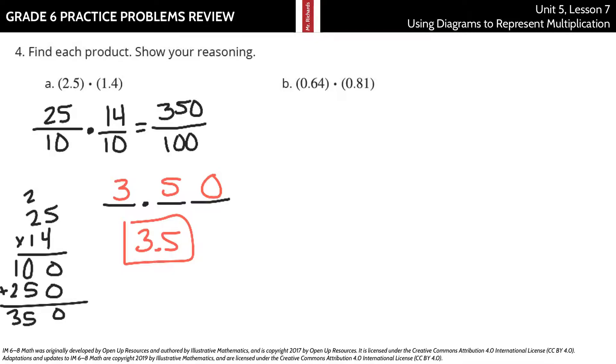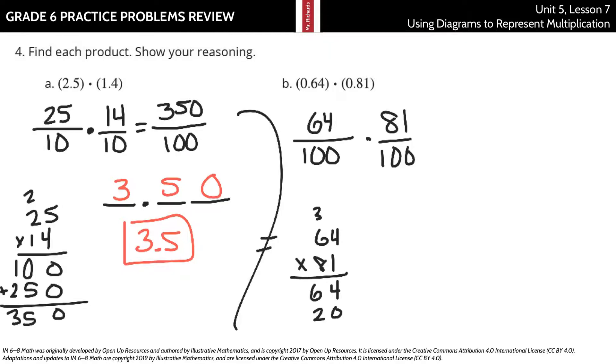Next we have 0.64 times 0.81. Again, I might have to take 64 times 81 here on the side, which is perfectly fine. 1 times 4 is 4, 1 times 6 is 6, 8 times 4 is 32, 6 times 8 is 48 plus 3 is 51. Add this up: 4, 8, 1, 5.